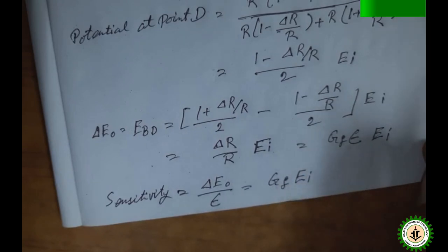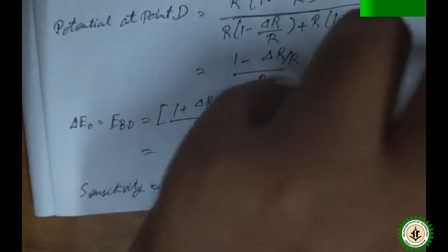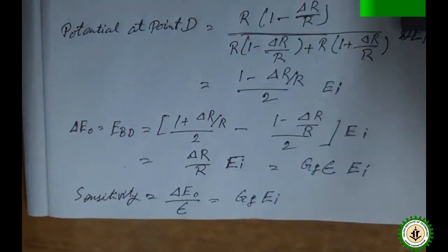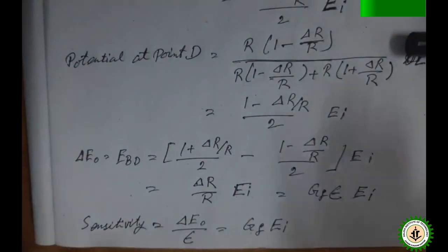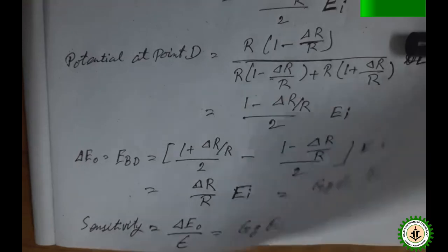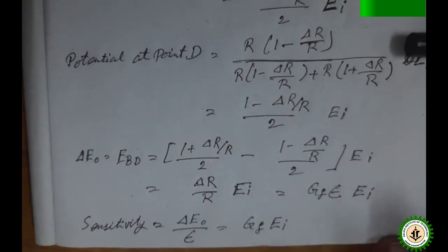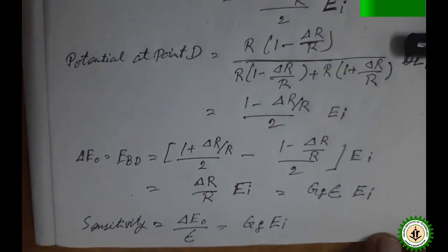For the full bridge, sensitivity is gauge factor times the input voltage, which is double that of the half bridge. In summary: the quarter bridge sensitivity is GF × EI / 4, the half bridge is GF × EI / 2, and the full bridge is GF × EI. Using four strain gauges gives maximum sensitivity, two gauges gives less, and one gauge gives the least.